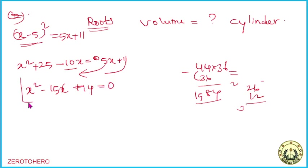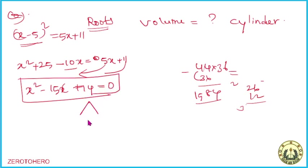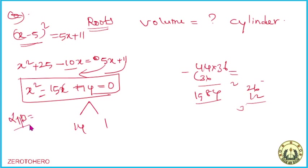We do the equation. Now we can multiply 14. Then minus alpha plus beta, then plus, then minus.